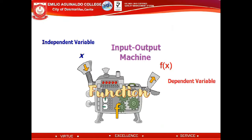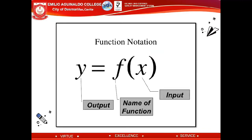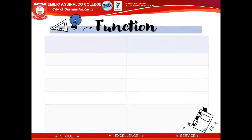A function is compared to a machine: whenever we have an input, we must have an output. On your screen, input is also called the x or the independent variable, while output is also called f(x) or the dependent variable. However, f(x) can also be written as y. So y is our output and f is the name of the function with x as the input.